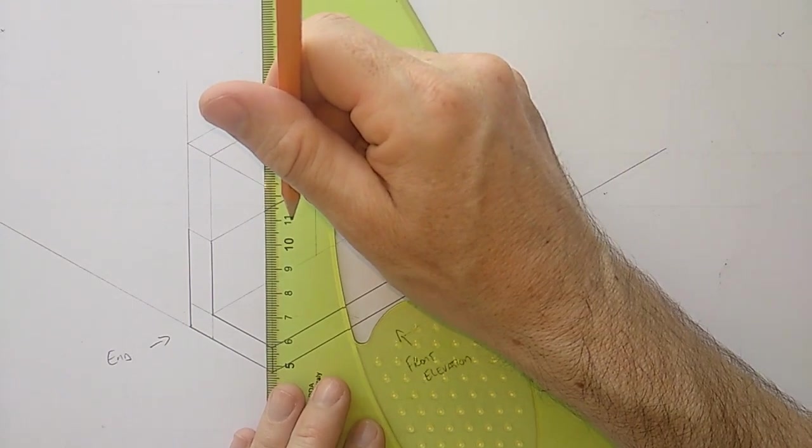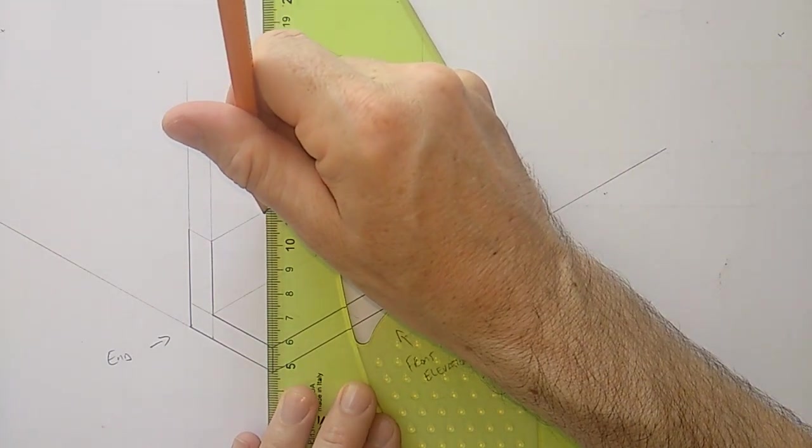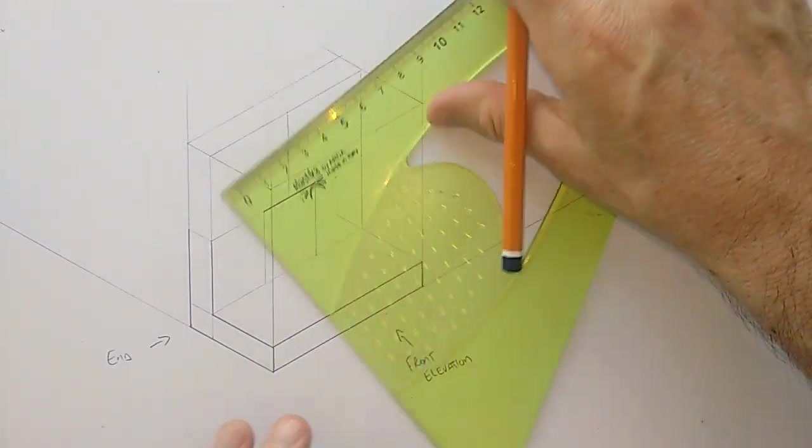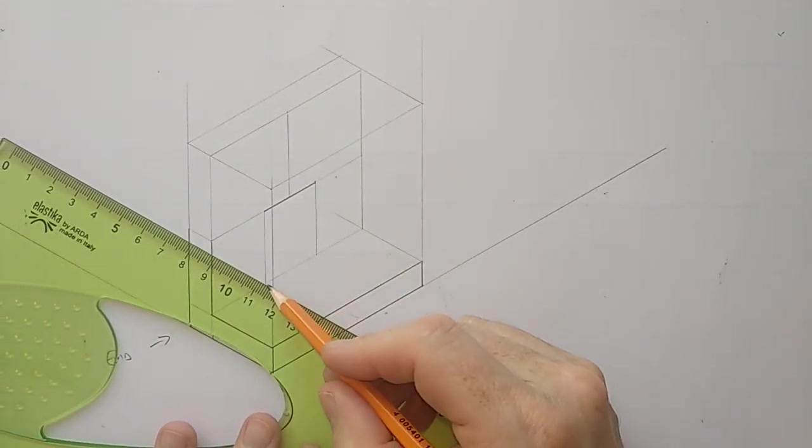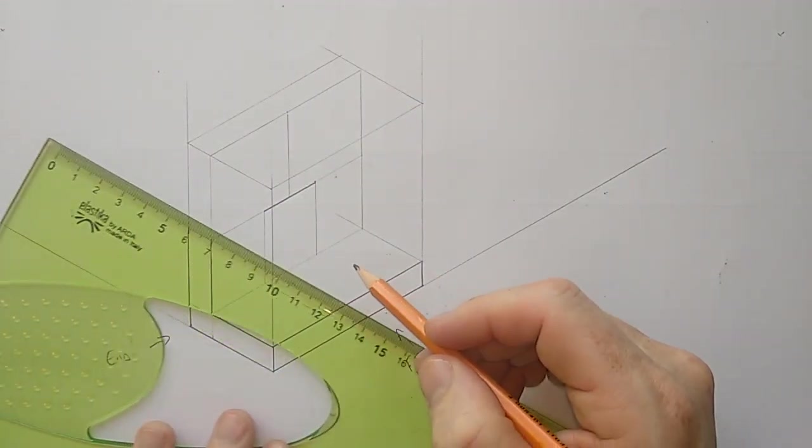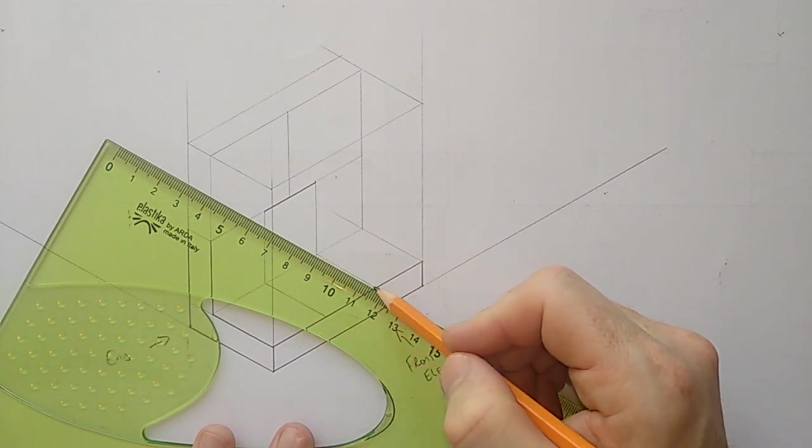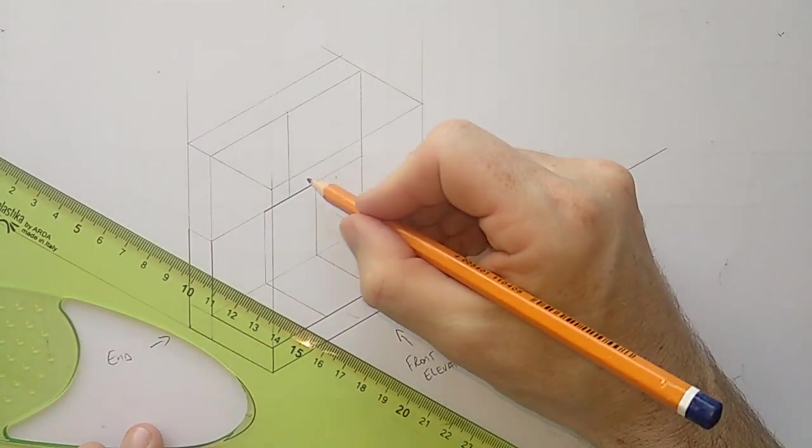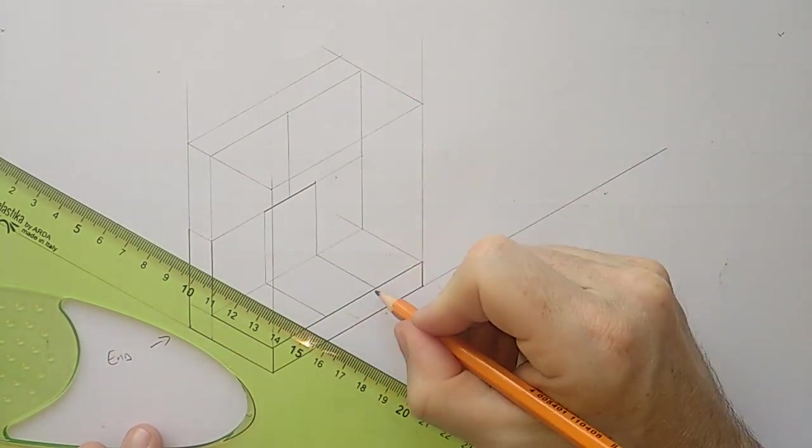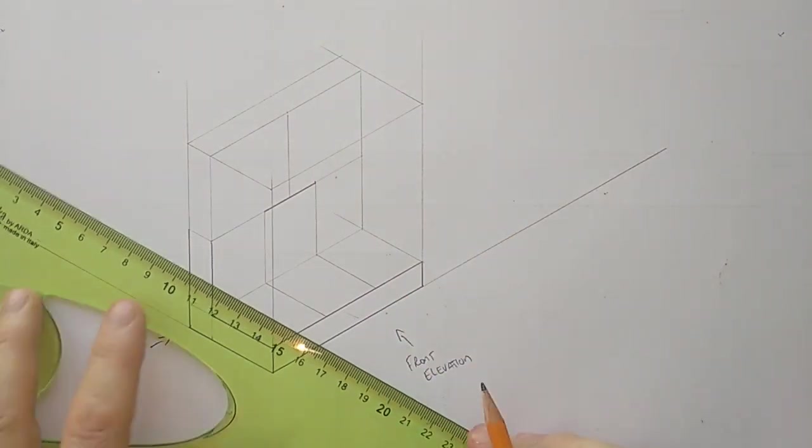So each of these guys goes down to the fold, and then across. And one of the keys to these drawings is if you can figure out how to move around the drawing, using your 30 degrees like this, going down and across, you can find where these points are quite quickly.